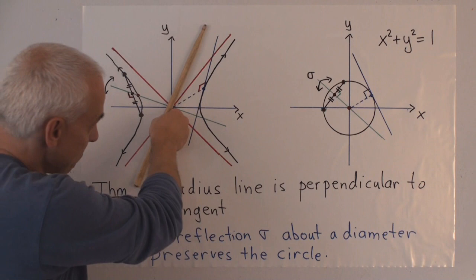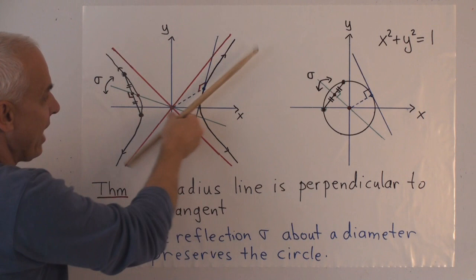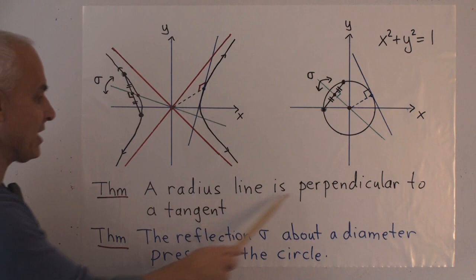So this line and this line are perpendicular. And this line here is essentially that one there. So this and this are perpendicular, the same property holds. A radius line is perpendicular to a tangent.